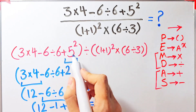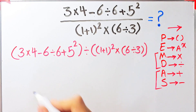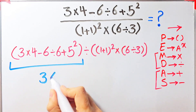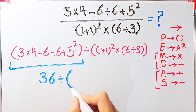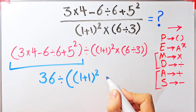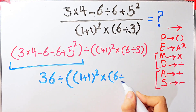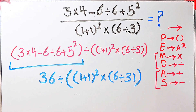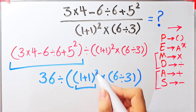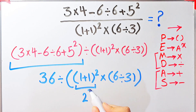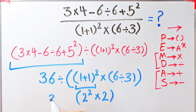Now let's simplify the second parentheses. We have 36 divided by open parentheses one plus one close parentheses, then all of them to the power of two, times six divided by three. First we simplify inside the parentheses: one plus one equals two. Now we have two to the power of two, then times six divided by three, which equals two. So the question is 36 divided by two to the power of two, times two.